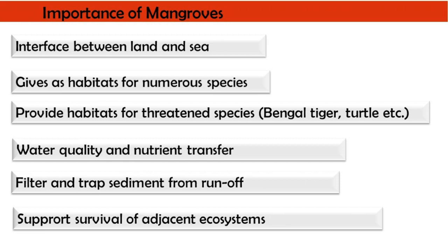This habitat provides an important space or niche for threatened species like the Bengal tiger and turtles. Mangroves help maintain water quality and also have a role in nutrient transfer. They act as a filter, trapping sediments from runoff, and they support the survival of adjacent ecosystems. As mangroves are in the coastal belt, they are the interface between the ocean and the terrestrial site, and numerous species are dependent on this ecotone.